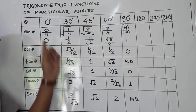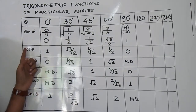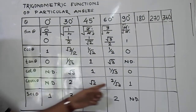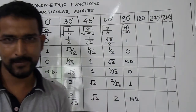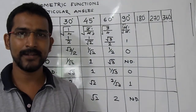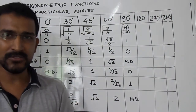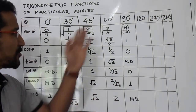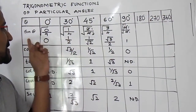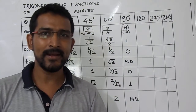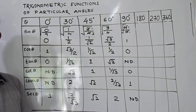This is how you can write the trigonometric functions of particular angles, and you should know all these values. Don't try to draw this table in your examination because it takes time. If you know the value of sin θ, you can calculate all these values in your mind in just a few seconds.